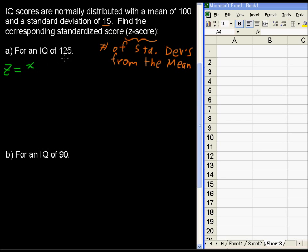So z equals the x value, in this example it's 125, some given x value, minus the sample mean, which for us is 100, over the standard deviation, the population standard deviation of 15 in this example.